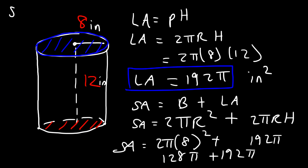So therefore the total surface area is 320π inches squared. So that's the answer for this example. That's the surface area, and this is the lateral area.